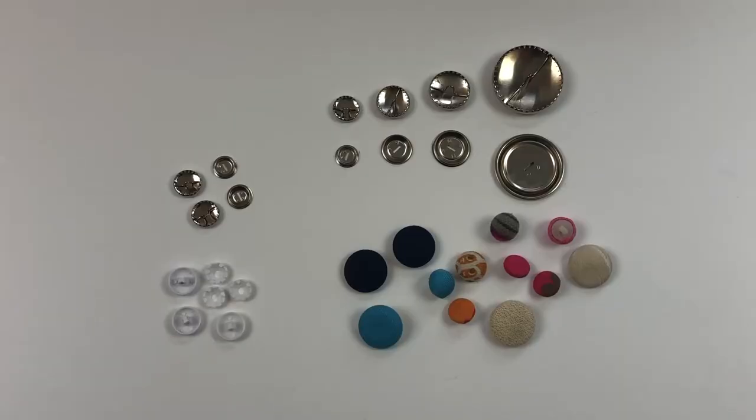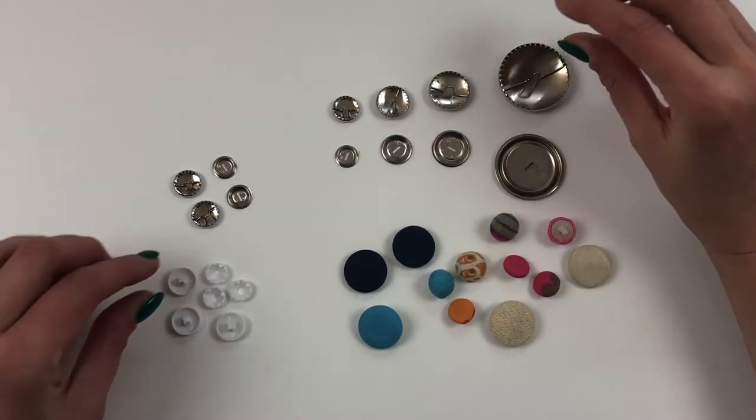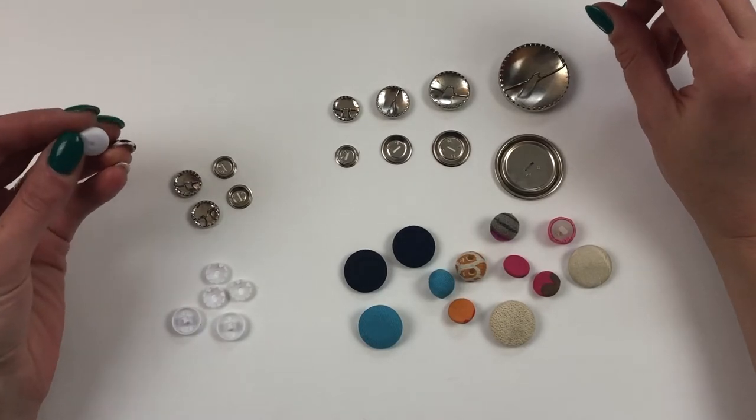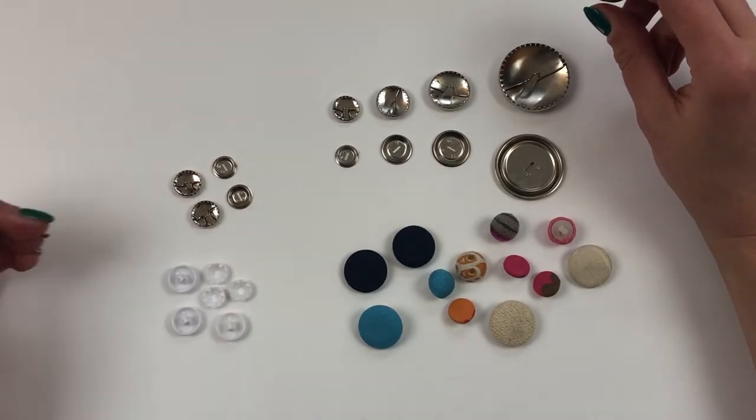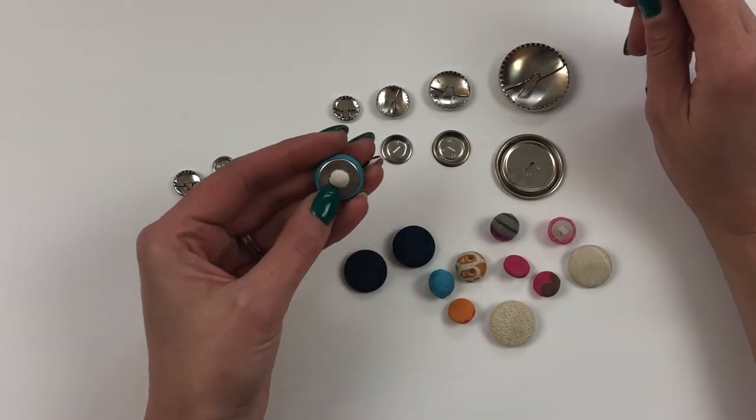There's a variety of different types of buttons that you can cover that are available to buy. You can get these metal ones or you can get these plastic ones. There's also companies that you can send your fabric off to and request a specific type of button to be covered and these are those sort of buttons here.